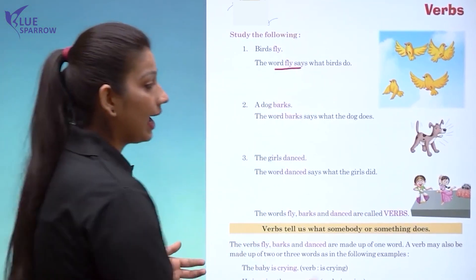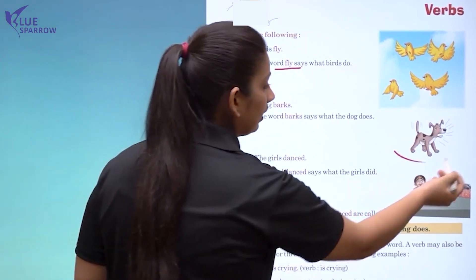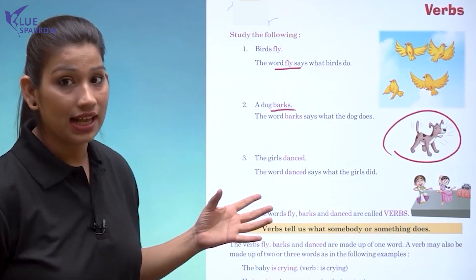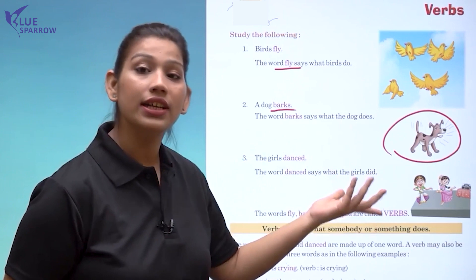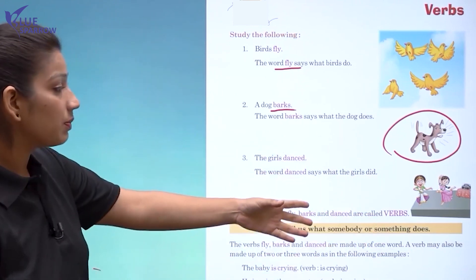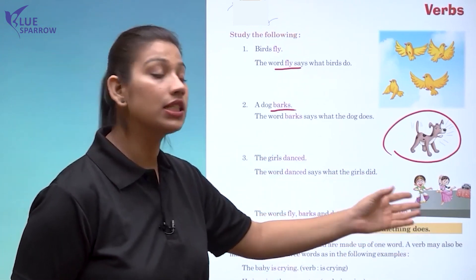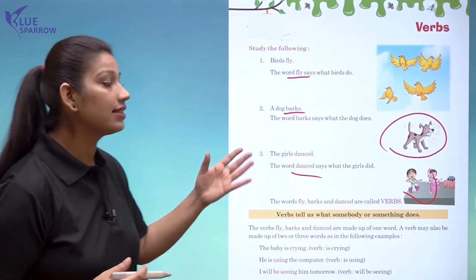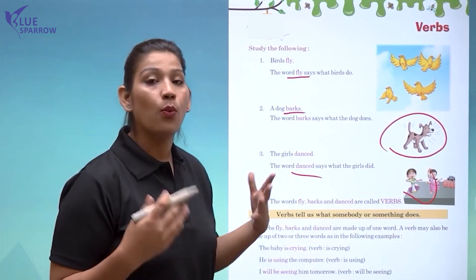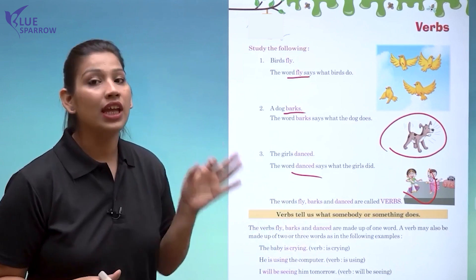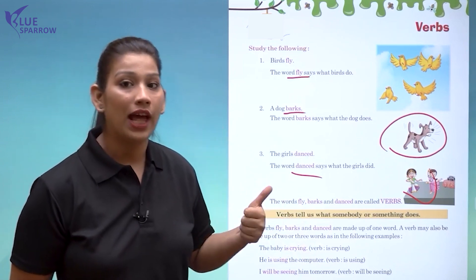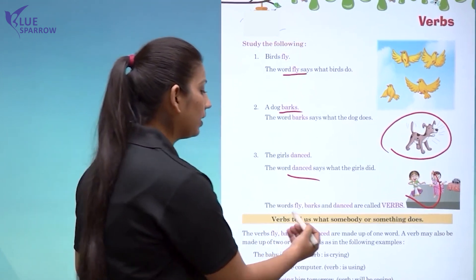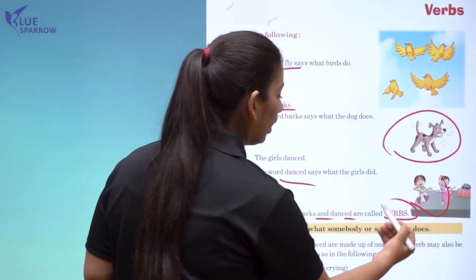A dog barks. As you can see in the picture, 'barks' tells us what the dog does. And the last picture we have is 'the girls danced.' These are the girls and they danced. 'Danced' tells us what the girls did. So here we got three words: fly, barked, and danced. All these words are called verbs.